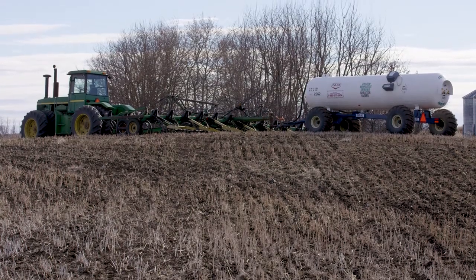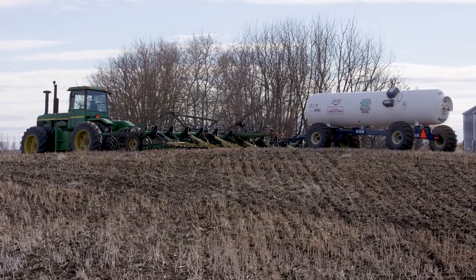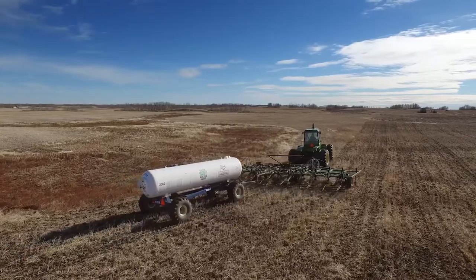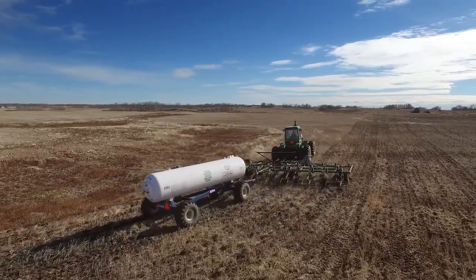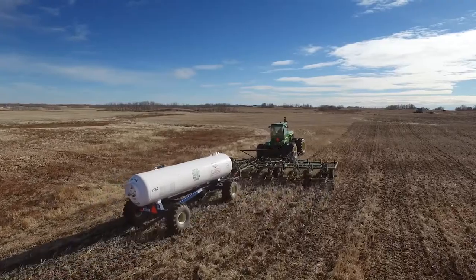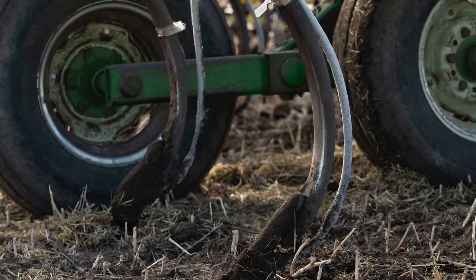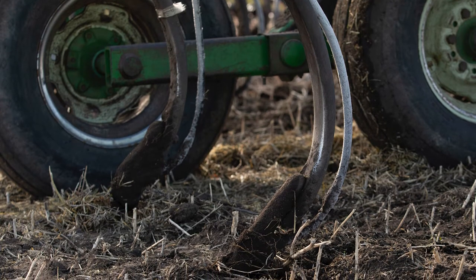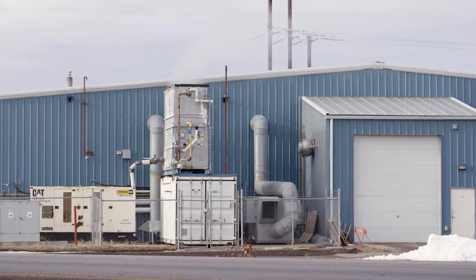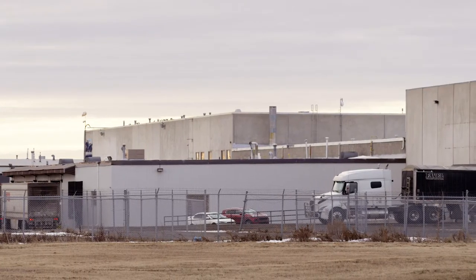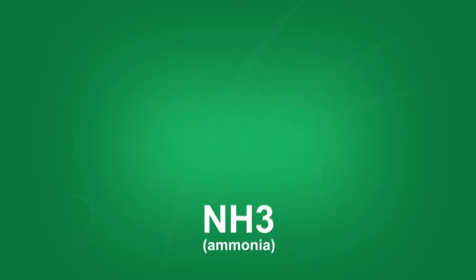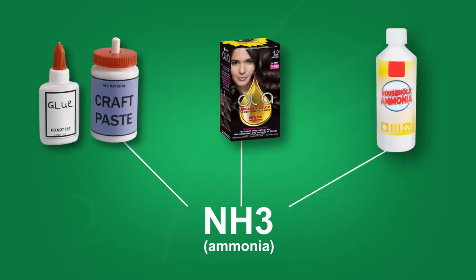Anhydrous ammonia is widely used across Canada in a range of agricultural and industrial applications. It is most commonly used as a highly effective fertilizer primarily in Western Canada, applied in liquid form through injection into the soil using specialized farming equipment. As a refrigerant, anhydrous ammonia is used in ice rinks, meat packing plants, and coolers in food stores. It is also used for a wide variety of other purposes including household products, waste management, and production of other fertilizers and synthetic products.